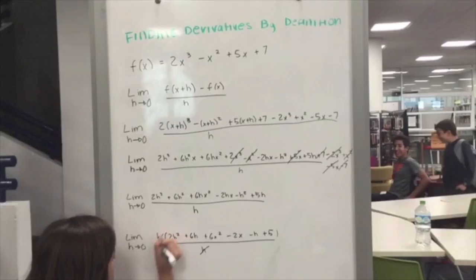Replace all the h's with zero to get the final equation. After this, rewrite what you got and this will be the derivative.